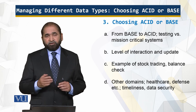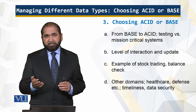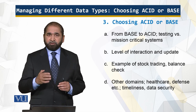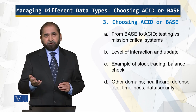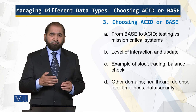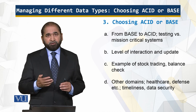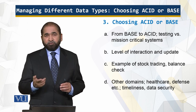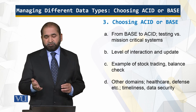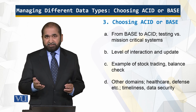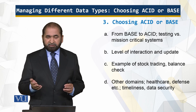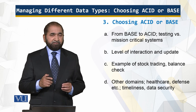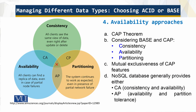For example, in stock trading, you need to know exactly how much money you have so you invest what you can afford. If the information is not up to date, you won't make the right decision — or worse, you may make a wrong decision. Other domains where choosing ACID versus BASE matters include healthcare, defense, and intelligence. We are looking at the timeliness of the data and the security of the data — these things are very important.